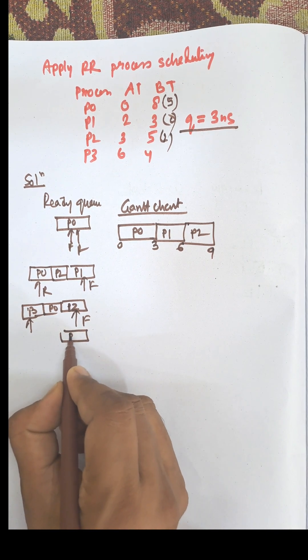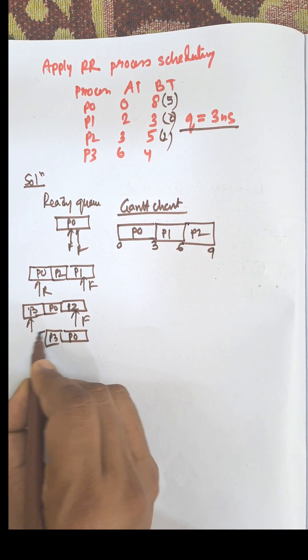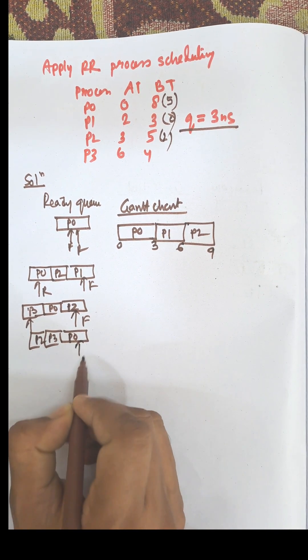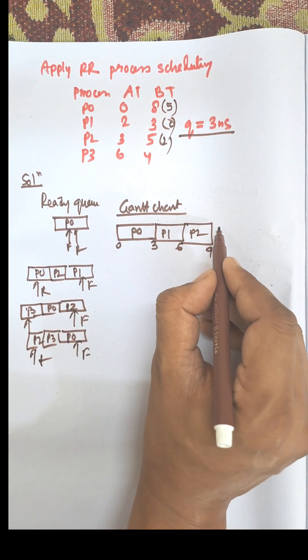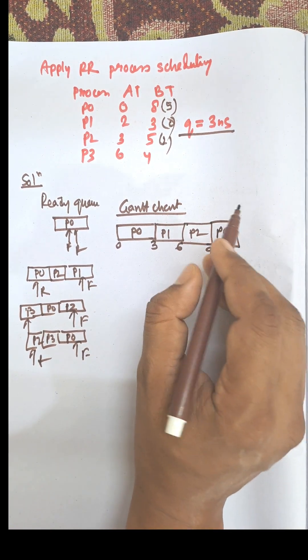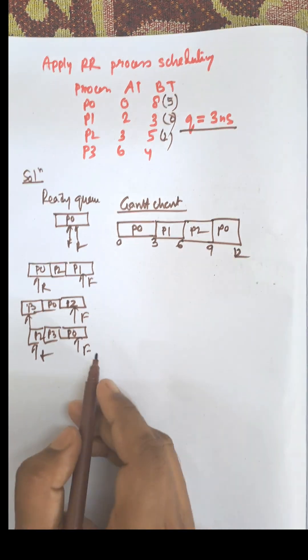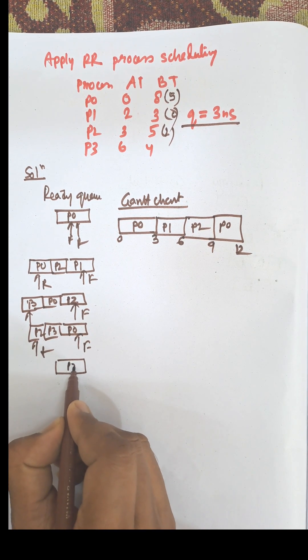Next one is P0, P3, and P2. P2 will move to the end of the queue. Now next one is P0. P0 is not completed, that is 12. Again P0 will be moved to the end of the queue.